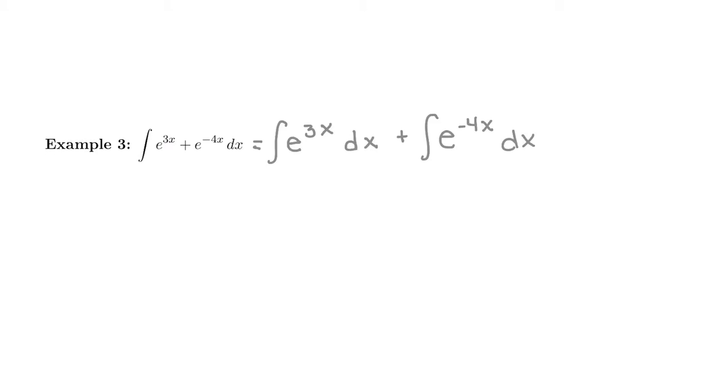It's nice that they're both base e though, because that's going to make our goal for taking the antiderivative pretty nice. We're going to use the basic integral that the antiderivative of e to the x is just e to the x plus c. So a nice antiderivative. We just have to get to the point where we're allowed to take that antiderivative.